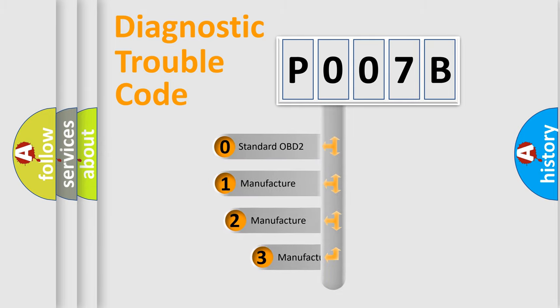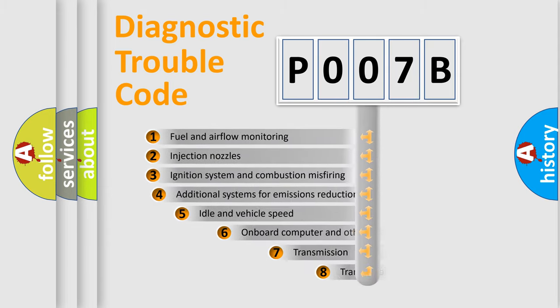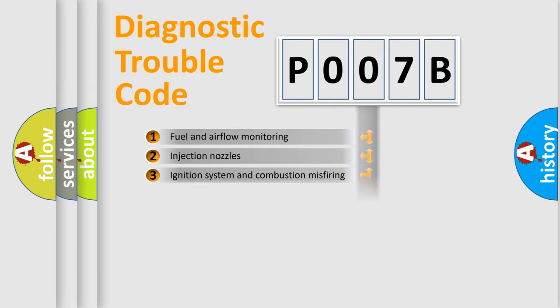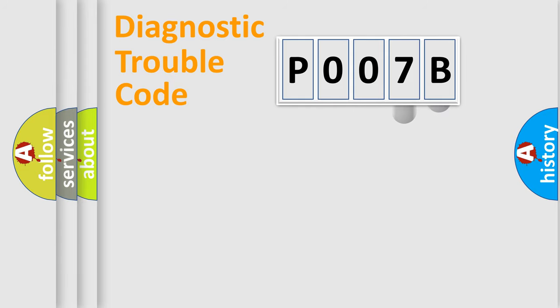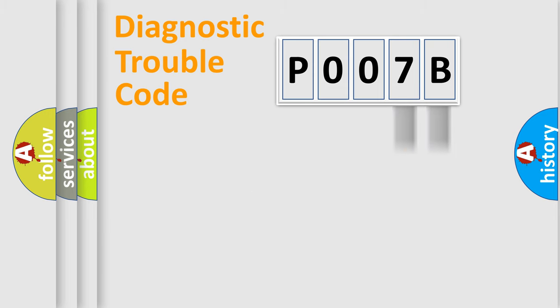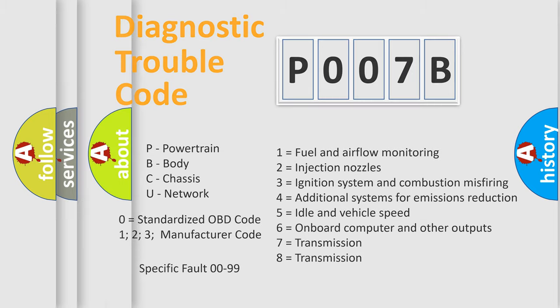If the second character is expressed as zero, it is a standardized error. In the case of numbers 1, 2, or 3, it is a more car-specific error expression. The third character specifies a subset of errors. This distribution is valid only for the standardized DTC code, and only the last two characters define the specific fault of the group. Such a division is valid only if the second character is expressed by the number zero.